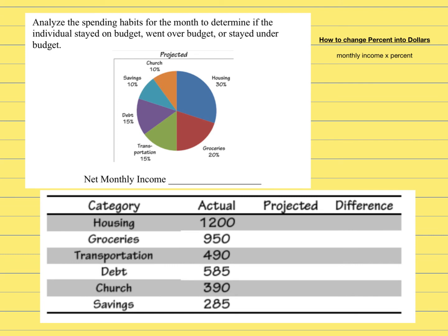The last thing we're going to look at is how to analyze what your spending habits are for the month — whether you stayed on budget, went over, or went under budget. On the left side of your notes page, there's a circle graph. At the top it says 'projected,' meaning this is what you think you're going to spend — just an estimate. Once the month is over, we compare the projected percentage to the real money actually spent, and find the difference.